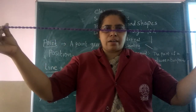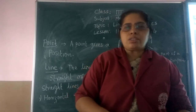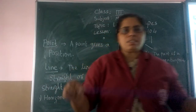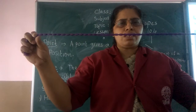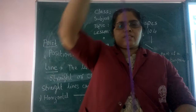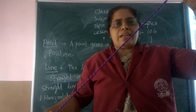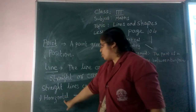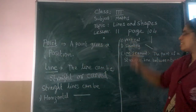A straight line has three parts. The first is horizontal. This is horizontal. This is vertical. And this is slanting. So the three types are: horizontal, vertical, and slanting.